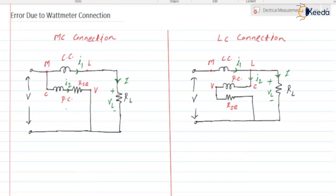Now we are going to discuss which errors occur in the wattmeter reading due to these two connections. Error is nothing but the difference between measured value and the true value. In the first circuit, the current flow to the current coil is I1, current flow to the potential coil is I2, current flow to the load is I, and voltage across the load is VL. In the second circuit, similarly, I1 is the current coil current, I2 is the potential coil current, VL is the voltage across load, and I is the load current.